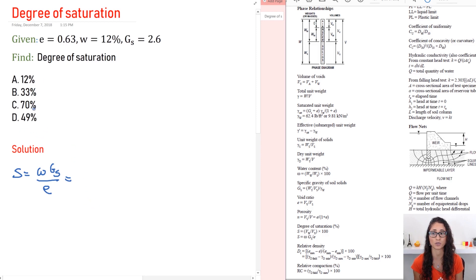So let's write 12%, gs is 2.6, void ratio is 0.63, and if you plug in this you're going to get 49%. So again for the units I just want to clarify it. So 2.6 doesn't have units, void ratio doesn't have units, so the only units you're left with is percentage.